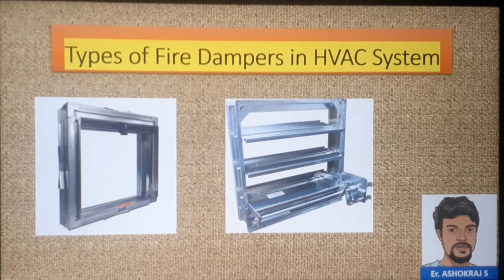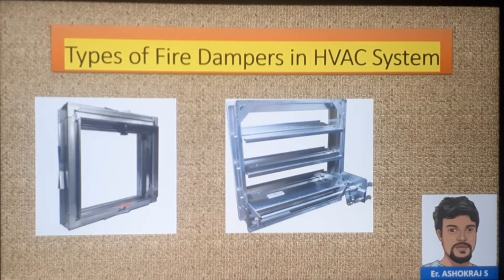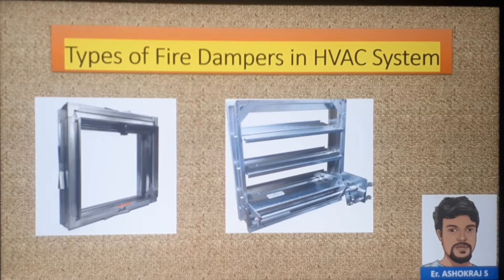A fire damper is used to prevent the spread of fire and flame from one area to another. For example, assume you have one air conditioning system that is distributing cooling air to four different rooms. In case any fire occurs in one room, that air comes back to the air conditioning unit and from there that fire can transfer to the other rooms.